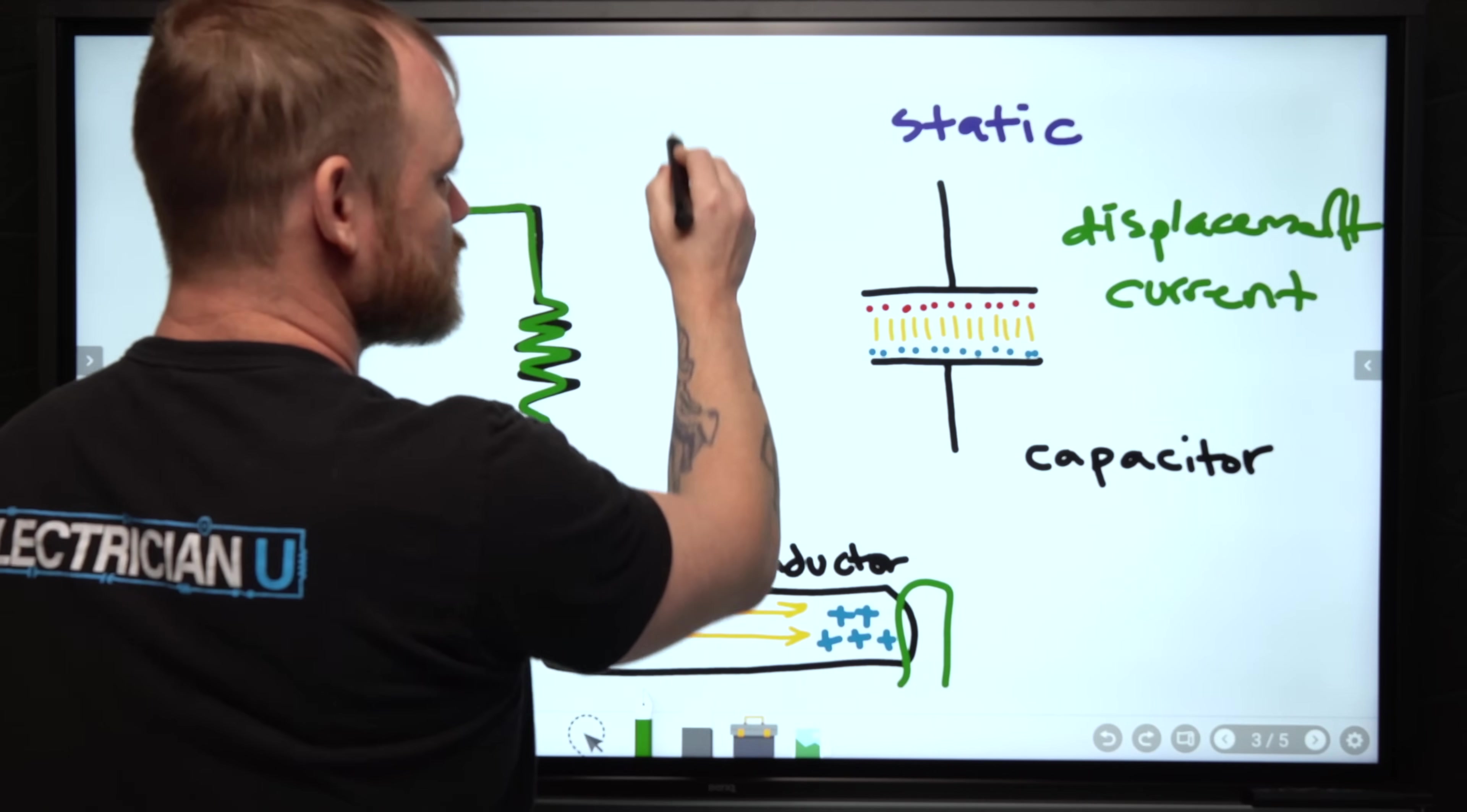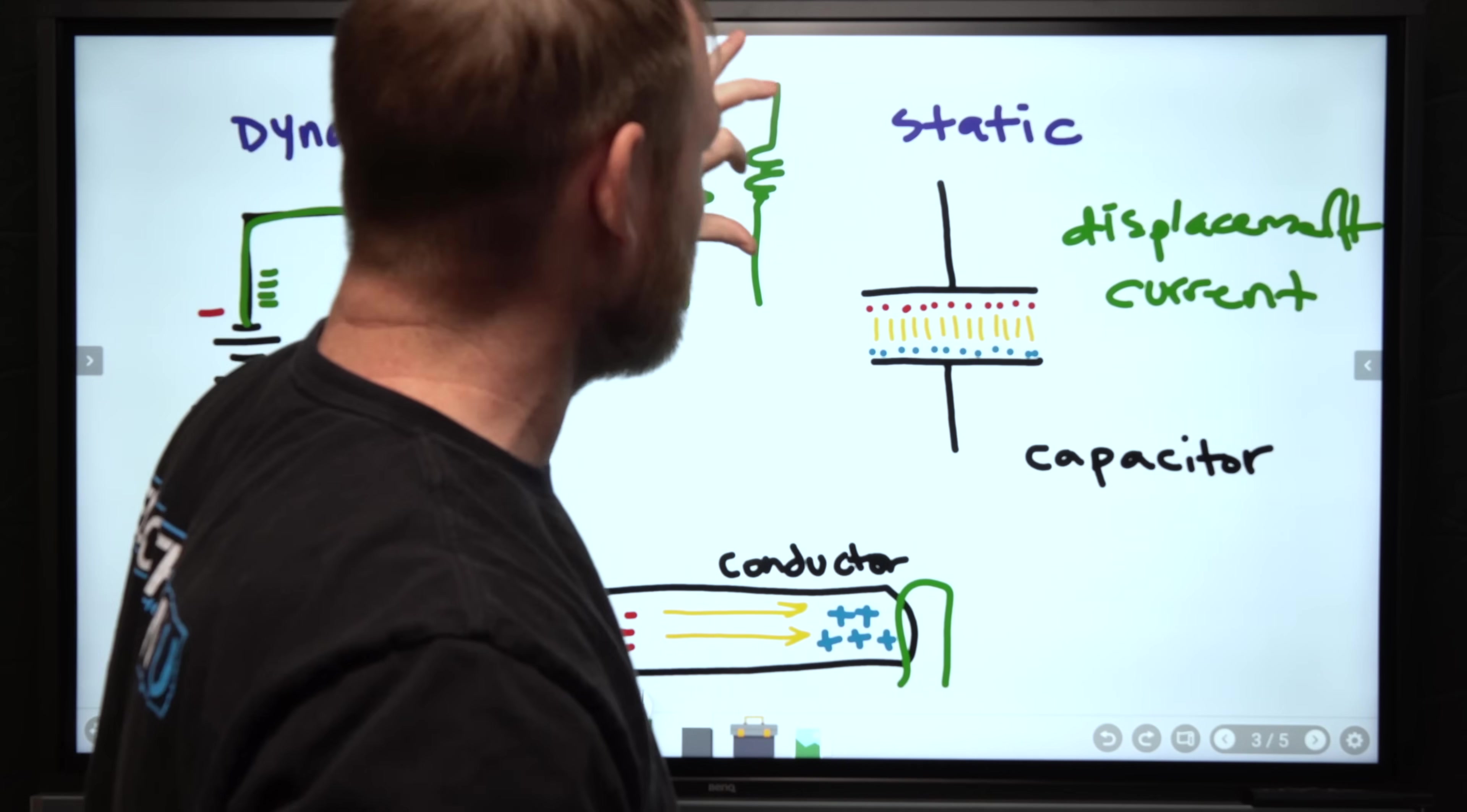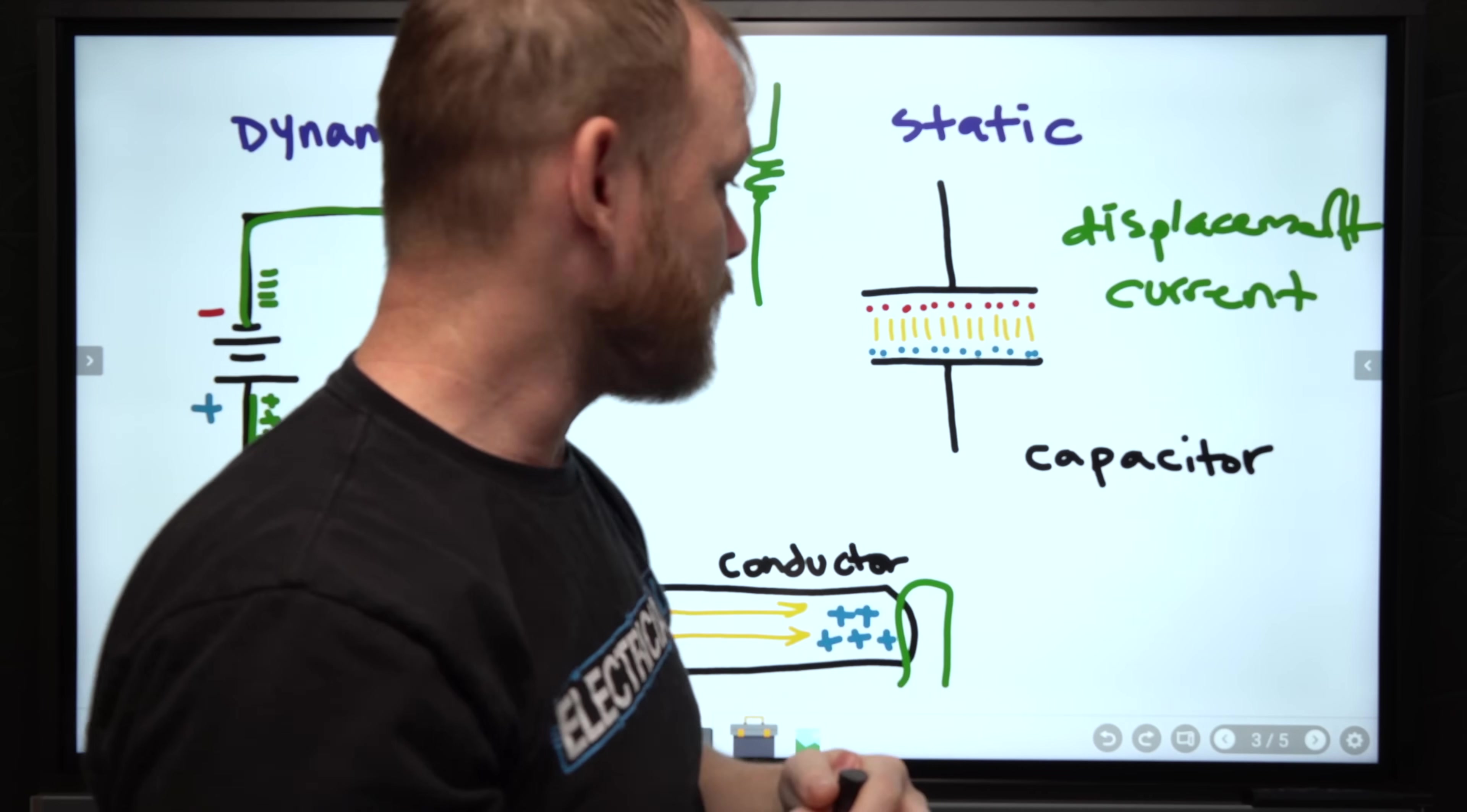It's similar to how in a transformer we have one side, one coil on one side, the other coil on the other side—nothing's touching between the two. We just have a magnetic field that's expanding and collapsing, and it allows the effects of current moving on this side to make the current on the other side start moving. It's the exact same phenomenon; it's just that a capacitor uses an electric field as its big use case, whereas an inductor in a transformer uses magnetic fields to do a very similar kind of thing.